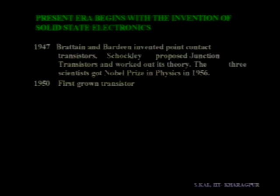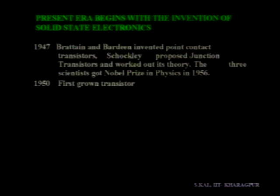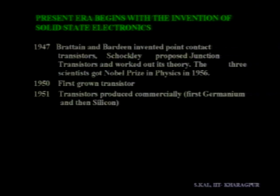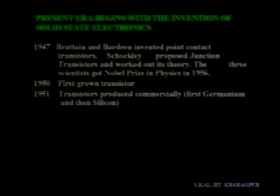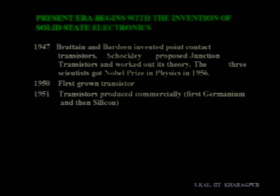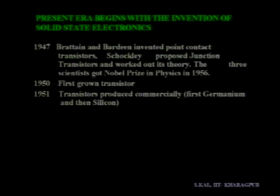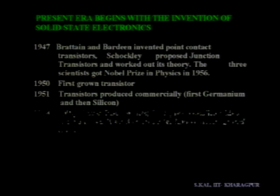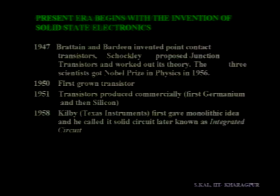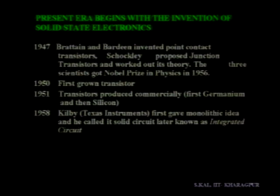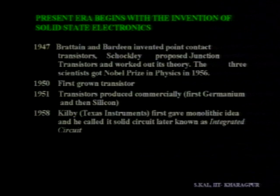After three years, in 1950, the first grown transistor was reported. And in 1951, transistors were produced commercially. The first commercial transistors were germanium, and then silicon transistors came into the market. In 1958, the revolution of integrated circuits started from the discovery of the monolithic integrated circuit.